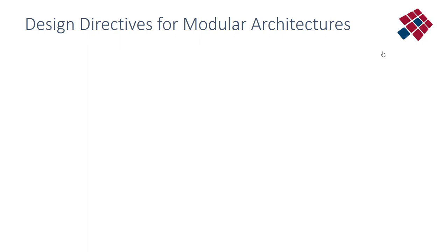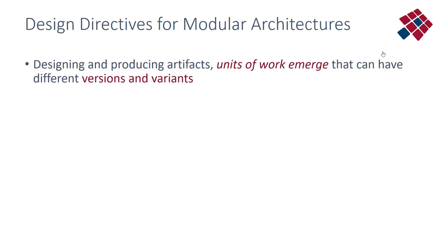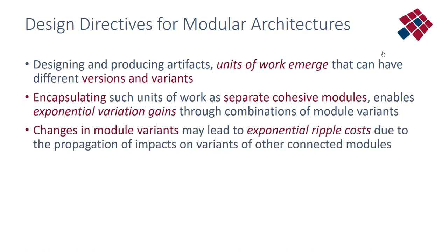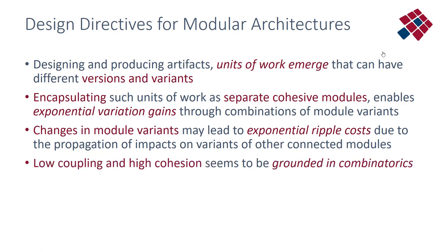In the previous part, discussing design directives for modeller architectures, we saw that designing and producing artifacts — units of work — emerge and can have different versions and variants. Encapsulating such units of work as separate cohesive modules, following the concept of high cohesion, enables exponential variation gains through combinations of variants. On the other hand, changes in module variants may lead to exponential ripple costs due to propagation of impacts on variants of other connected modules — which is the principle of low coupling. So low coupling and high cohesion seem to be grounded in combinatorics.